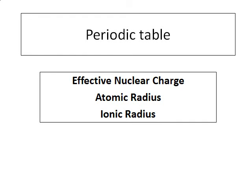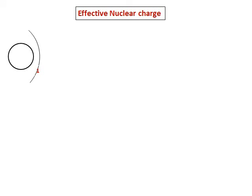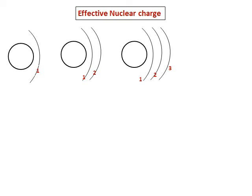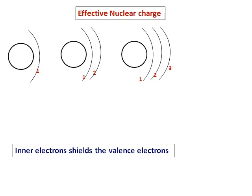Continuing with the periodic table, we will learn about effective nuclear charge and how it affects atomic radius and ionic radius. We can represent the nucleus as a circle with electrons in orbits around it. If the electron resides in orbit number 1, it is closer to the nucleus and the positively charged nucleus will have a larger attraction towards it. Farther the electron, less will be the effective nuclear charge.